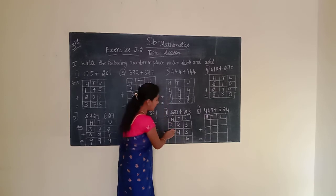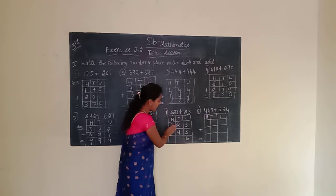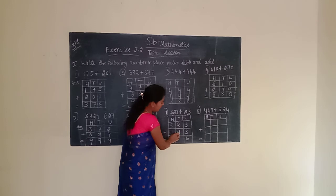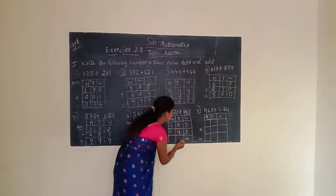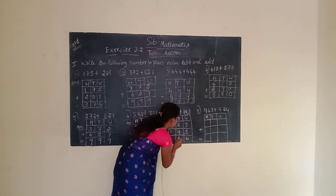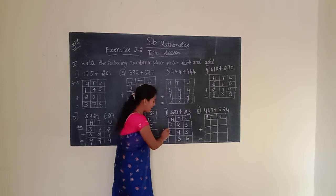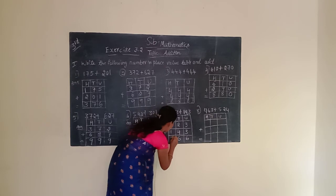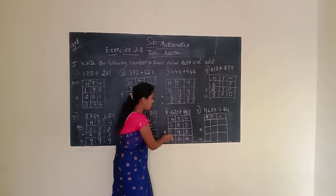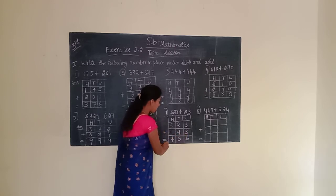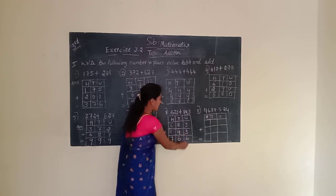Next, move to the tens place. Tens place is having 2 and 4. 2 plus 4 is 6. We have to write 6. Next, move to the hundreds place. Hundreds place is having 6 and 1. 6 plus 1 is 7. We have to write 7. Given number is 623 plus 143 equals 766.